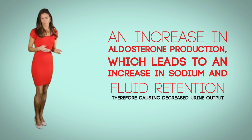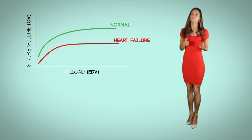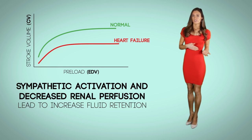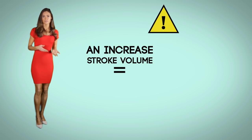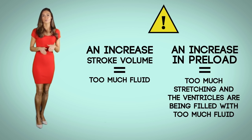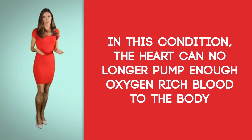Urine output must be greater than 30 milliliters per hour in order to maintain adequate renal perfusion. Looking again at the Frank-Starling graph, both the sympathetic activation and decreased renal perfusion lead to increased fluid retention. This eventually can lead to pulmonary congestion, meaning backup of fluid in the lungs. Because of an increase in stroke volume driven by an increase in preload, the ventricles are being filled with too much fluid, and the heart can no longer pump enough oxygen-rich blood to the body — thus known as congestive heart failure.